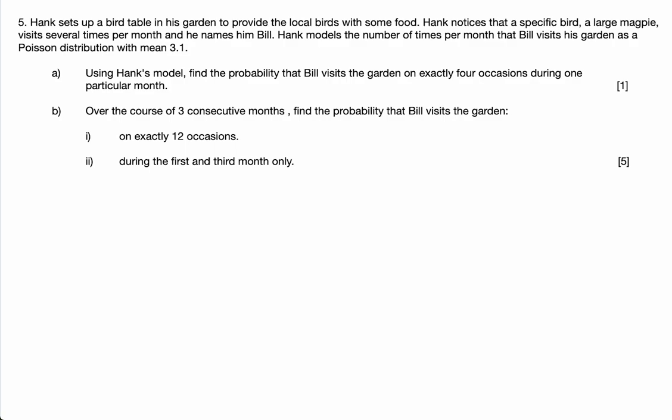Okay, question five. Hank sets up a bird table in his garden to provide the local birds with some food. He notices that a specific bird, a large magpie, visits several times per month. He names the bird Bill. He models the number of times per month that Bill visits the garden as a Poisson distribution with mean 3.1.